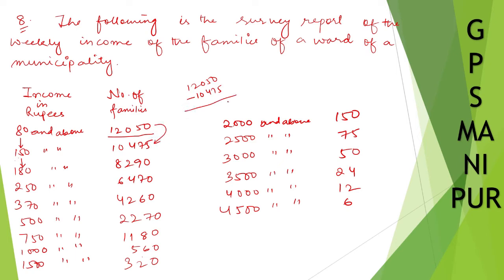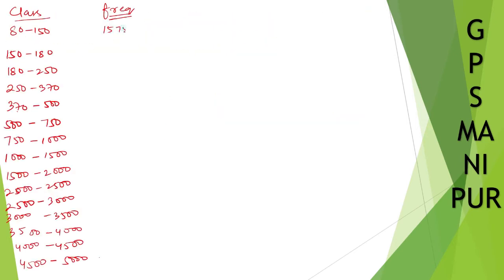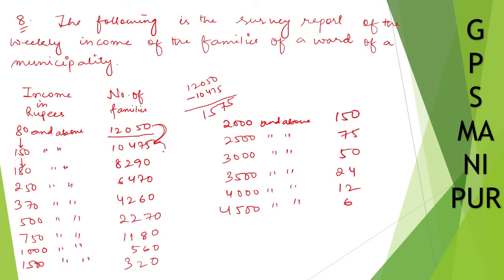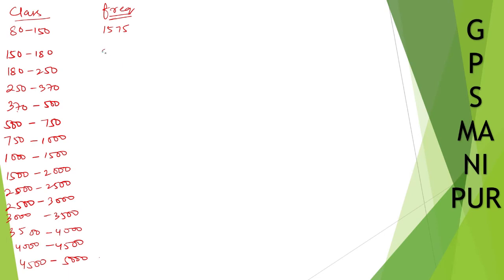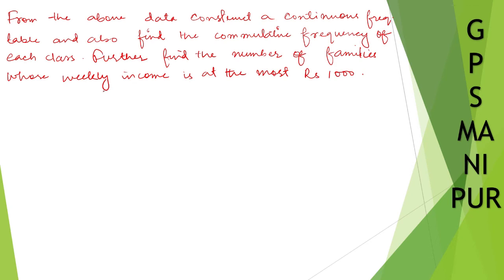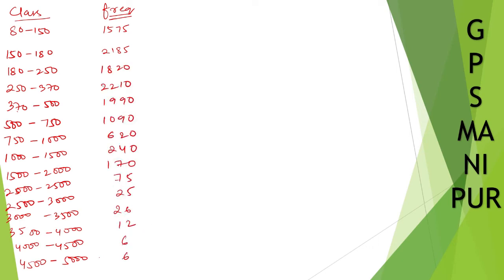So 12050 minus 10475 equals 1575. Write down 1575 as the frequency for the first class. For the second class (150 to 180), it is 10475 minus 8290, which equals 2185. Similarly, I calculate the remaining frequencies by subtracting consecutive values. I have written down everything in the frequency table.